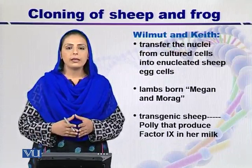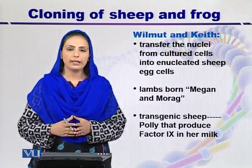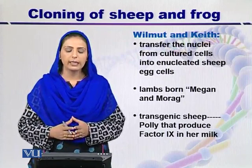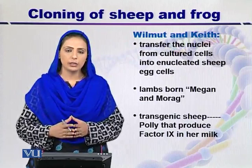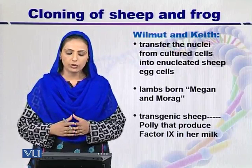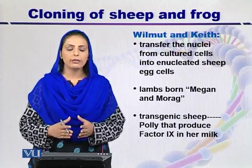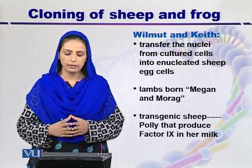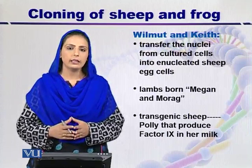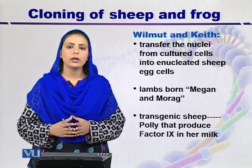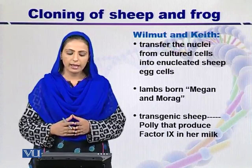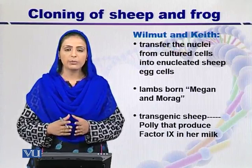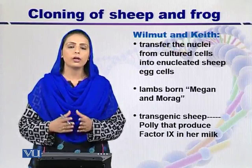Wilmut and Keith also performed an experiment on sheep but used a somewhat different technique. They used cultured sheep cells which they froze in a laboratory. They transferred the nuclei from the cultured cells into enucleated sheep egg cells, and from this technique two lambs were produced — one named Megan and the other named Morag.